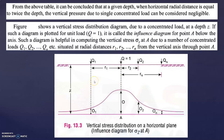The figure shows a vertical stress distribution diagram due to a concentrated load at depth z. This is the concentrated load acting at ground level, and z is the depth below. If such a diagram is plotted for unit load, that is q equal to 1, it is called the influence diagram for point A below the axis — similar to influence diagrams in structural analysis, plotted for a single unit load.